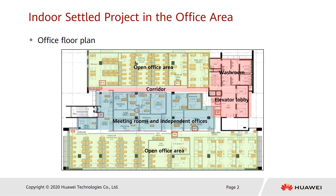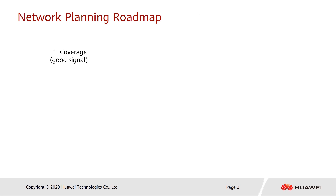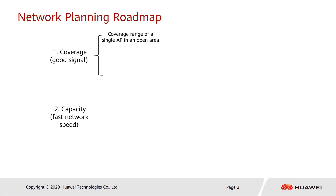This is the analysis of this floor plan. Let's summarize the entire design concept for network planning. A good network planning solution involves two key elements: coverage and capacity. Coverage is a basic requirement, while capacity is a higher-level requirement.